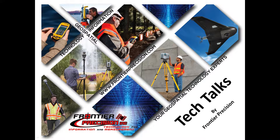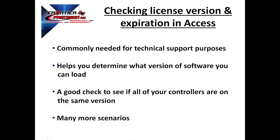Hello, my name is Jay Haskamp and I'd like to welcome you to another Tech Talk by Frontier Precision. Today's session we are going to show you how to check the license version and the expiration date of your Trimble Access software. Checking for this information is commonly needed for various technical support purposes, as well as helps you determine what version of software you can load based on your expiration date. It's also a good check to see if all of your controllers in the field are on the same version, and there are many other scenarios where this information may be beneficial. Let's take a look at how we can do this.